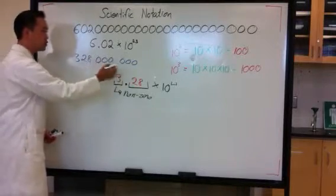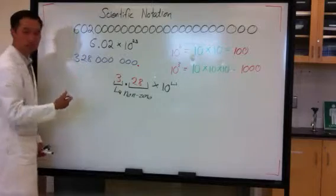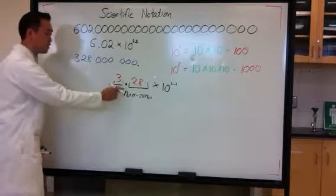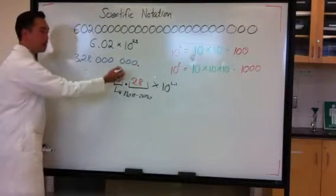Now, right now, the decimal is located here, because when there is no decimal shown, you assume it's at the end. I want the decimal to be between 3 and the 2, because that's the format. How many jumps is that?